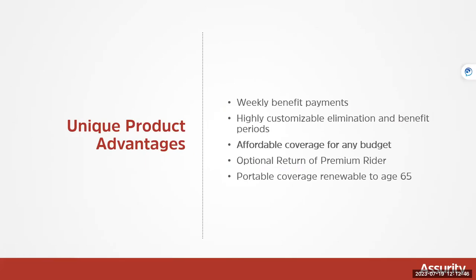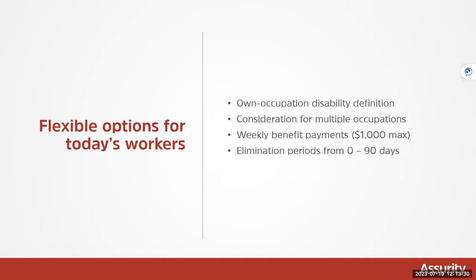This is a short-term disability product with a weekly benefit payment. Most individual disability products pay a monthly benefit, but this is weekly — meaning at the end of the elimination period, you get paid each week. It's highly customizable and really affordable. It's portable, renewable to age 65, and conditionally to 75 if you're still working full-time. It has a built-in true own-occupation definition — not a modified own-occ. If you cannot do your job, even if you could do a different job making ten times as much, we will still pay the benefit.